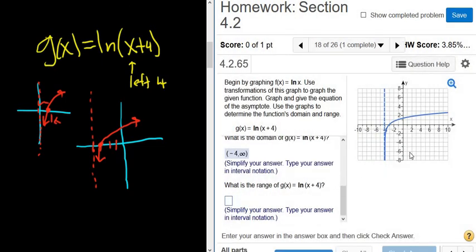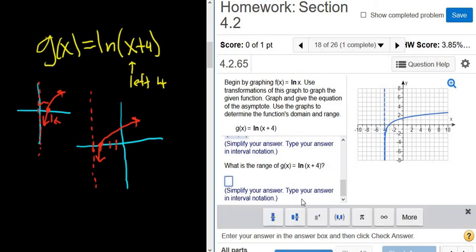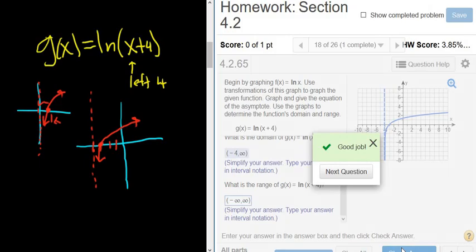Now it wants the range. That's from the bottom up. So all real numbers. Negative infinity to infinity. This does go up forever. It just goes up really slow. So negative infinity to infinity. Let's try it. And that's it. Thank you.